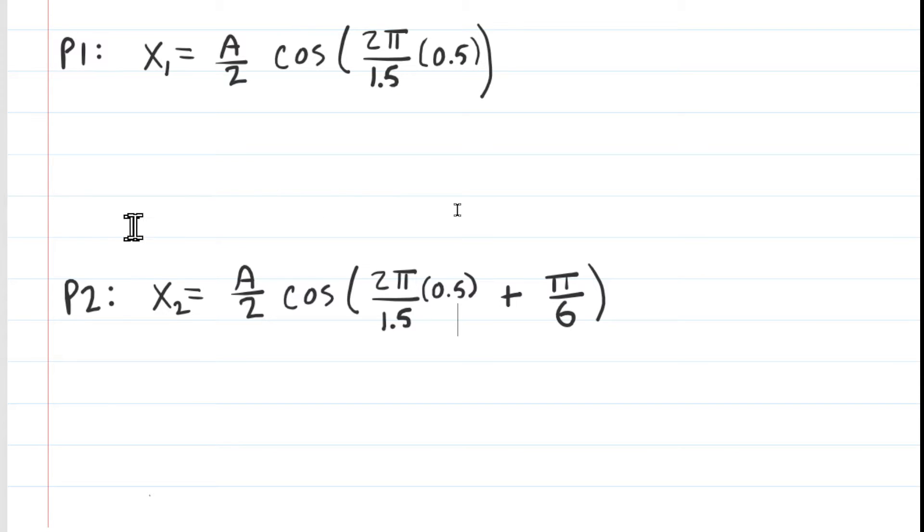So we've plugged in the value of little t. Now we'll make sure our calculators are set to radian mode. Whenever you use this position equation, make sure your calculator is set to radian mode. We're going to have A divided by 2 and then you can pick up that calculator and enter all of that in at once.